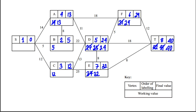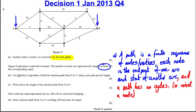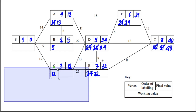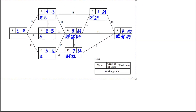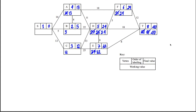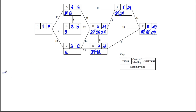Now to fill out the working and state the path and its length. I find the path by going backwards. Starting at T with value 40: 40 − 8 = 32, so ET must be in my path.